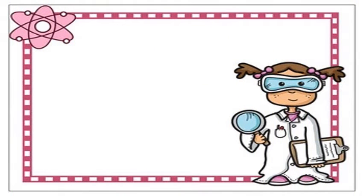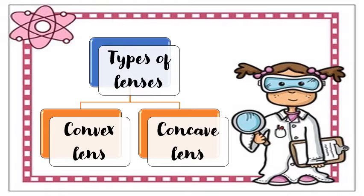So far, you have been taught about the lens and its function. A lens is made of glass, plastic, or transparent material and must be curved. When light rays pass through a lens, they change direction. There are two main types of lenses: convex lens and concave lens. Let's begin with the convex lens first.